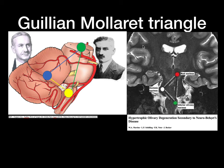The important triangle in any case of hypertrophic olivary degeneration is the Guillain-Mollaret triangle. These are the two great scientists who discovered it. It includes the ipsilateral red nucleus, the inferior olivary nucleus, and the contralateral dentate nucleus.